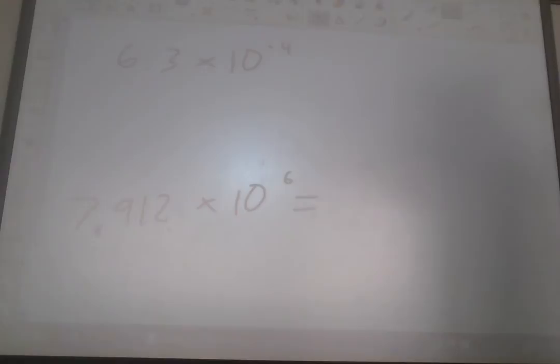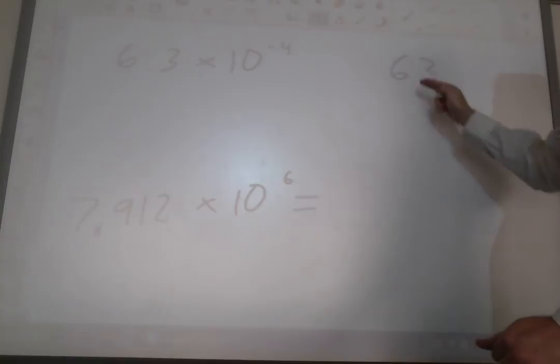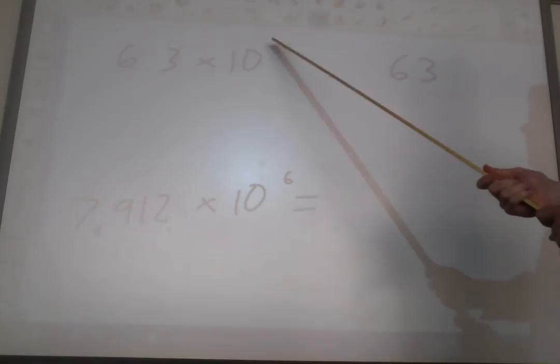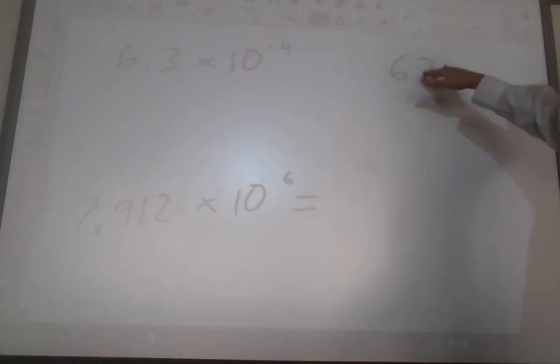Now, we can also use this information to go in the other direction. We can say, okay, this number is written in scientific notation. What would it look like in standard form? Well, we've got 6.3. So, somewhere in our answer is going to be the number 6.3. It says 6.3 times 10 to the negative 4th. Well, this negative 4th is a clue right off the bat that this is going to have to be a very small number, since it's a negative 4th.